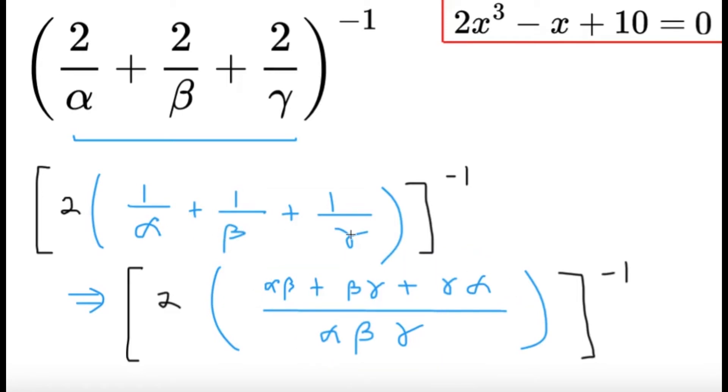So essentially, we're just writing these three into one fraction, because 1 over alpha is just the same as saying beta gamma divided by alpha beta gamma.